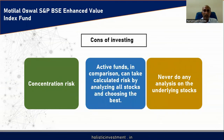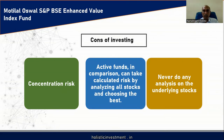In contrast, an actively managed fund's manager analyzes each stock and chooses the best based on parameters like capital efficiency, competitive edge, value proposition, long-term sustainability, management ambition, and quality of management. This gives actively managed funds higher potential to outperform the benchmark. We go to mutual funds because we don't know how to select stocks or don't have time — we pay an expense ratio for that. But in an index fund, the fund manager's potential is not fully used; active funds fully utilize the fund manager's potential.